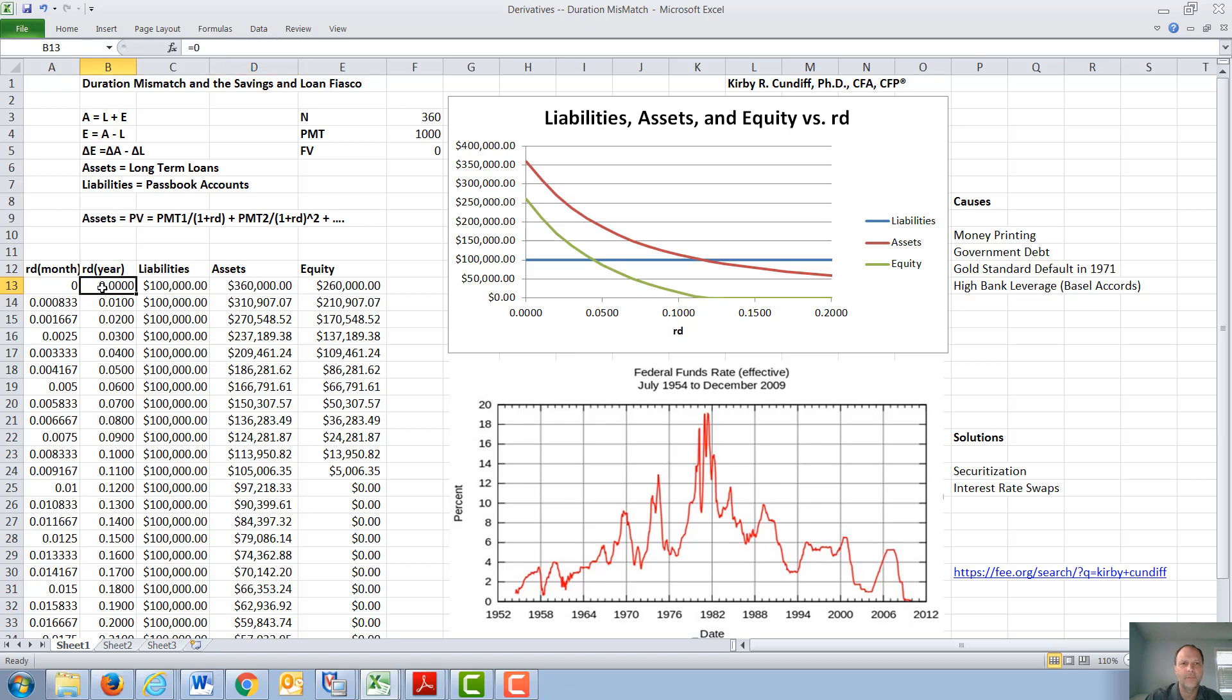We will start out with an interest rate of zero, go up to an interest rate of 0.1, or an interest rate of 1%, 2%, 3%, and this is on a yearly basis. If you divide that by 12, we get the interest rate on a monthly basis, and we look at all these changes in interest rates.